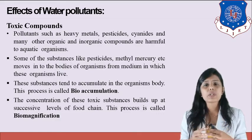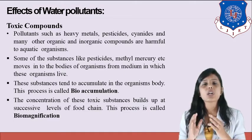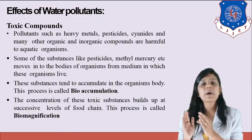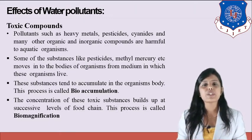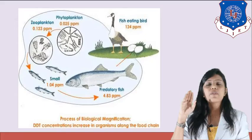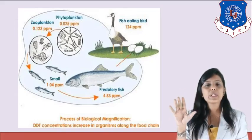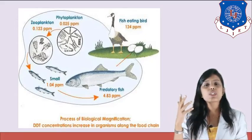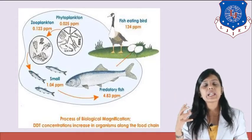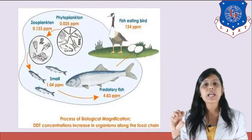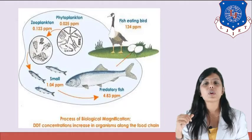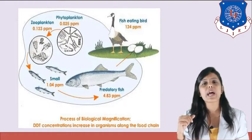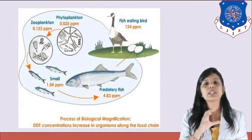Bioaccumulation is when any toxic compound enters a living organism, and biomagnification is when the concentration increases as it is passed from one living organism to another. In the food chain — from phytoplankton to zooplankton to small fish to big fish — the concentration of the toxic compound keeps increasing.